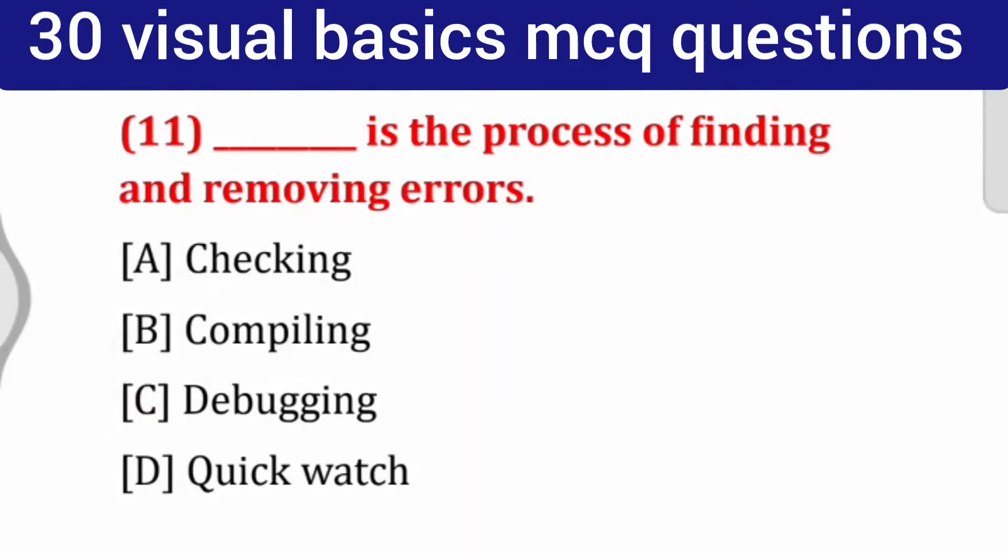Question number 11: ___ is the process of finding and removing errors. Options: checking, compiling, debugging, quick watch. Correct answer is debugging.